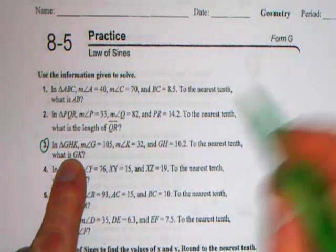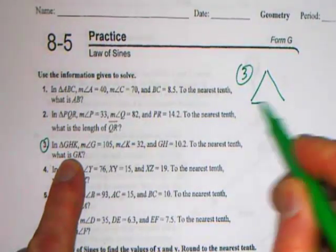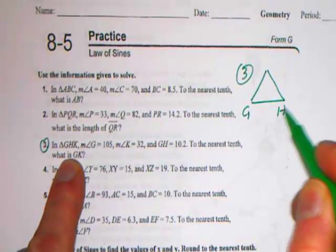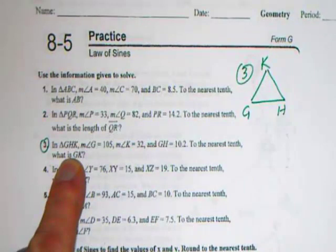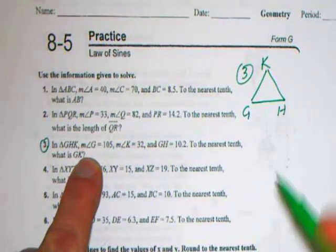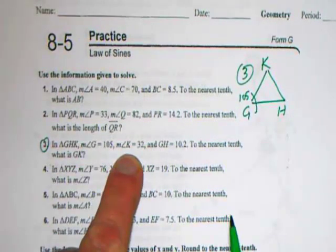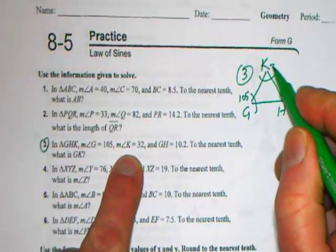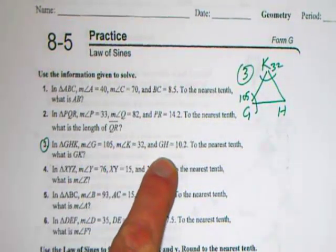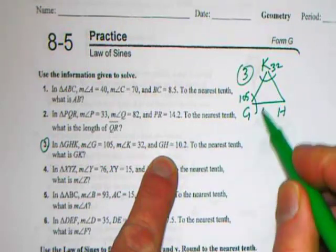It says we have triangle GHK, so we'll do number 3 up here. I need to sketch a triangle to represent the information. So I've got triangle GHK. Angle G has a measure of 105. Angle K has a measure of 32. And the distance from G to H, which is little k, is 10.2.